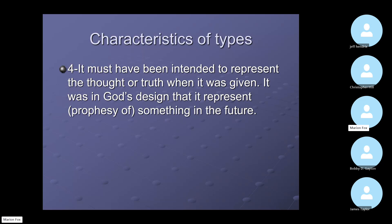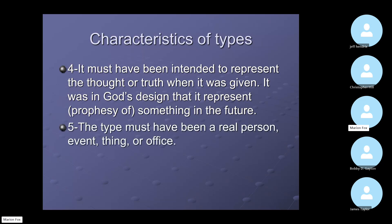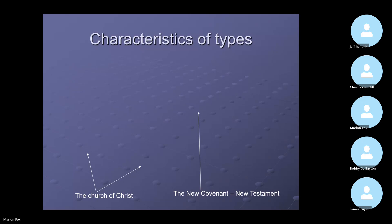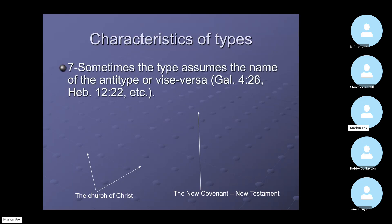Sometimes something may be an allegory, which would be something that wasn't necessarily designed to represent that future truth. The type must have been a real person, a real event, a real thing, or a real office — it must have been real. The scriptures sometimes interpret the type and antitype for us. Sometimes the type assumes the name of the antitype, or vice versa.